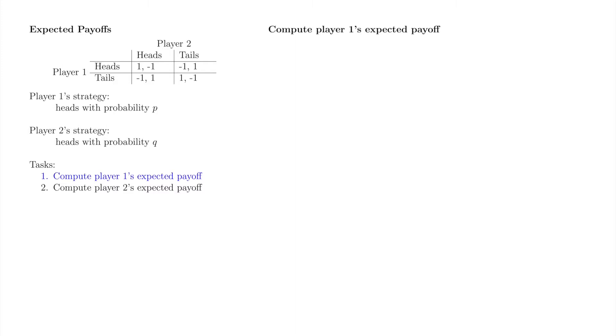We'll take care of player one first. There are four possible outcomes: heads heads, heads tails, tails heads, and tails tails. As usual, the expectation is the sum of payoffs of each outcome weighted by the associated probability mass function.